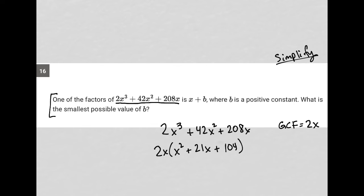And then if I wanted to factor this trinomial, I just need to figure out what are two factors of 104 that add up to 21. Does that even exist?